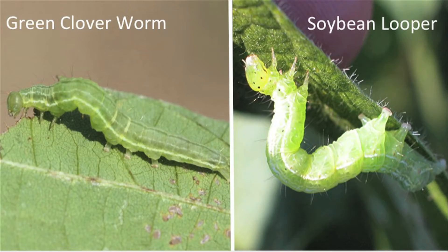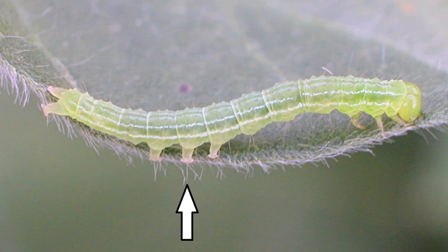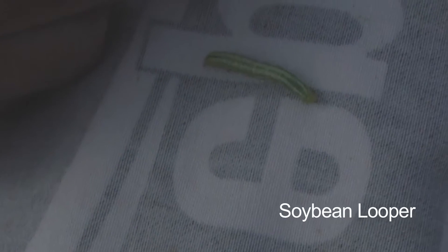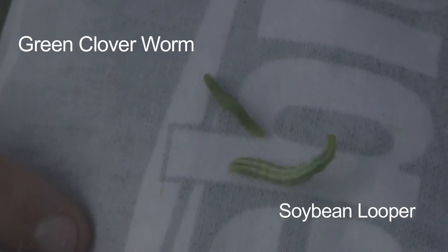The defoliating caterpillars likely to occur in Tennessee include species such as the green clover worm and cabbage or soybean loopers. Green clover worms are the most common defoliating caterpillar observed throughout the state and can occur anytime during the season. The green clover worm is a green caterpillar that only gets about an inch long at full size. It has only three pairs of prolegs in the middle of its body, and compared to the loopers, its body tends to be uniform width from head to tail. It also has a unique behavior — it will flop or wriggle very violently when disturbed, essentially going spastic if you hold one and poke it.